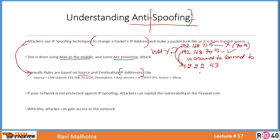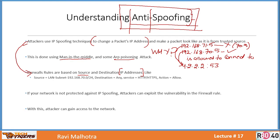As a firewall administrator, your main job is to ensure that such practices are not successful. There is a concept of anti-spoofing by which you can ensure that if somebody is trying to use such techniques, that connectivity will be dropped. If your network is not protected against IP spoofing, attackers can exploit the vulnerability in the firewall rule and gain access to the network.